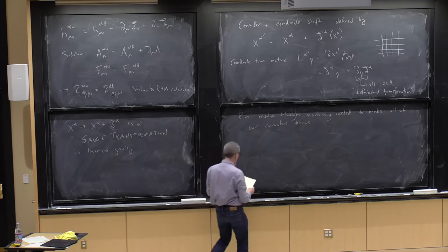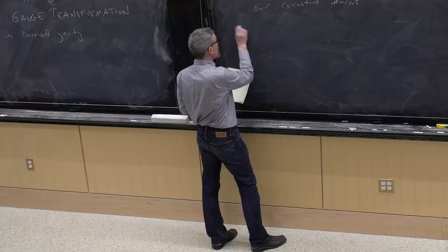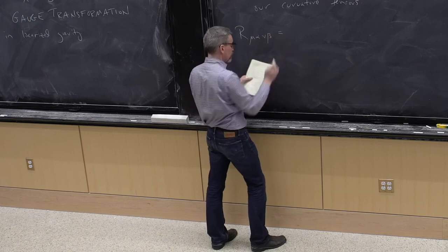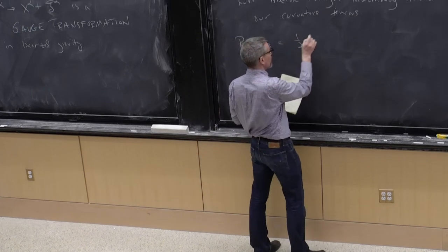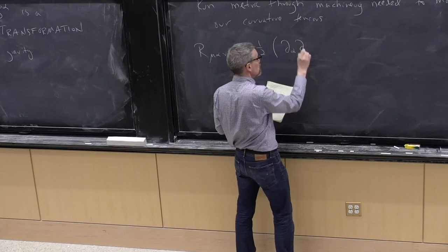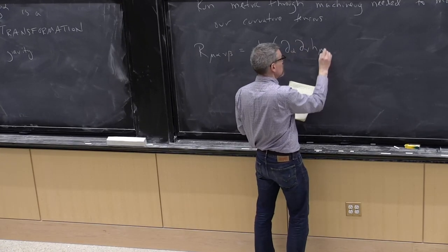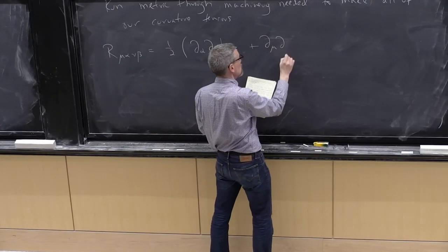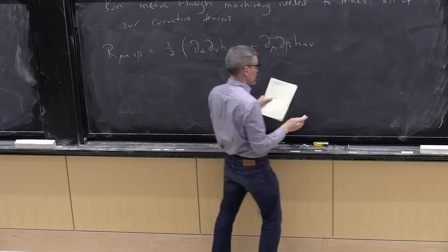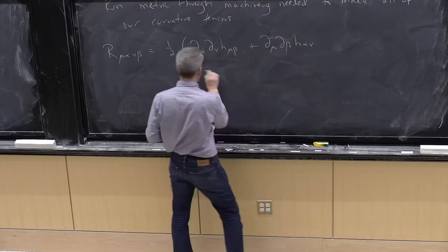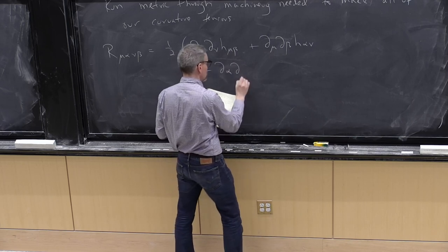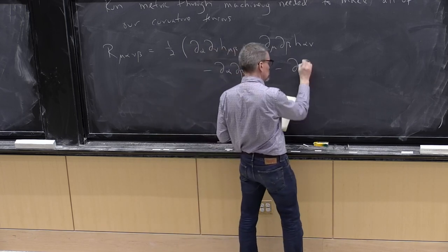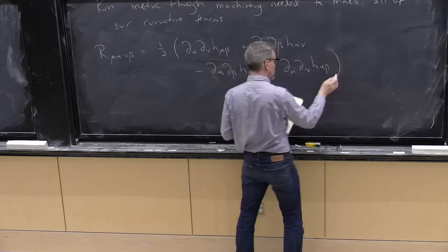We are linearizing, so any term that looks like h² dies. Keeping only things to linear order in h, the Riemann tensor turns into the following combination of partial derivatives of the metric perturbation h.